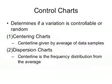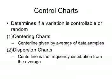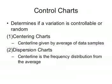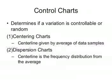Control charts are at the basis of statistical process control methodologies. The use of control charts is to distinguish variations of a system that are random and uncontrollable from those that are controllable and can be corrected. There are two types of control charts: centering charts, where the center line is given by the average of data samples, and dispersion charts, where the center line is given by the frequency distribution from the average.